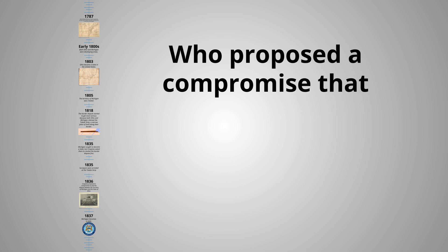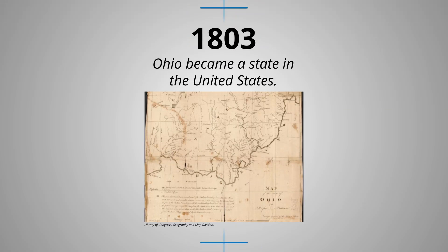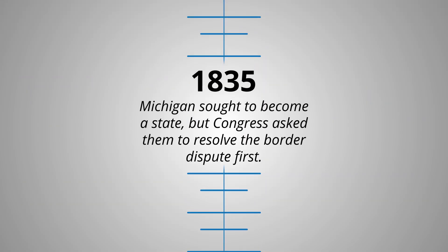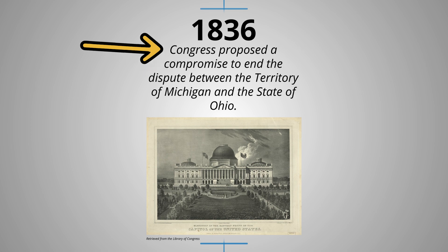Question: who proposed a compromise that would end the conflict between Michigan and Toledo, and when was it? I can do a quick scan for the word 'compromise' on the timeline. I see it — 1836. And when I read the description on the timeline, I can see that Congress is who proposed the compromise. Finding answers on a timeline is pretty easy. Everything is in order and lots of information is given with only a few words.